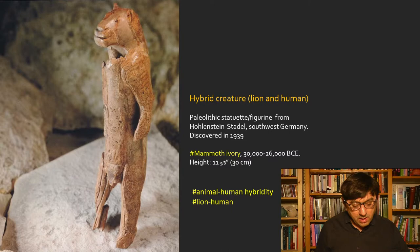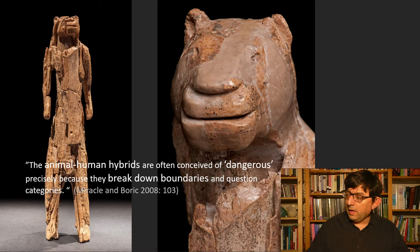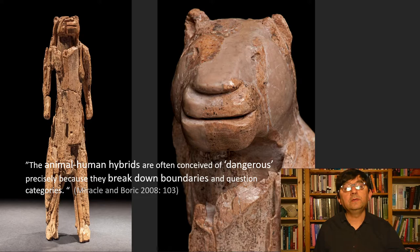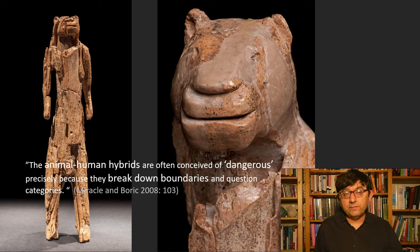The figurine has a lion's head but borrows the posture of a human being with elaborately carved arms, legs, mouth, and eyes. As Miracle and Boric argue in their paper, these animal-human hybrids are often conceived of as dangerous precisely because they break down boundaries and question categories — categories of the human and the animal, their bodies, and so on. Such animal-human hybridity is not limited to representations or art in prehistoric communities, but is also found in the treatment of real human bodies.